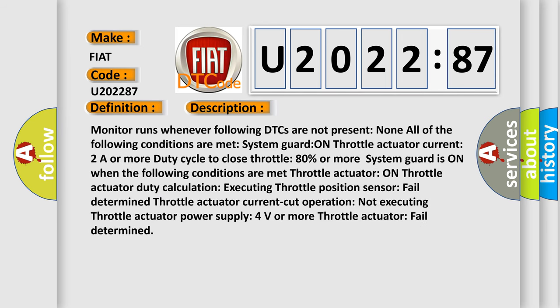Monitor runs whenever following DTCs are not present: none. All of the following conditions are met: System guard on, throttle actuator current to 80% or more duty cycle to close throttle. System guard is on when the following conditions are met: throttle actuator on, throttle actuator duty calculation executing, throttle position sensor fail determined, throttle actuator current cut operation not executing, throttle actuator power supply 4 volts or more, throttle actuator fail determined.